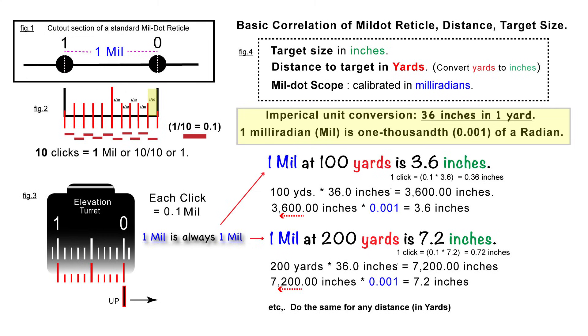And then you can do the same math calculations for 200 yards, and you will get 7.2 inches. And again, you just do the calculation for each click at 200 yards on your elevation turret, 0.1 per click. So you're going to multiply 0.1 mil times 7.2 inches, and that's going to equal 0.72 inches for each click on your turret.